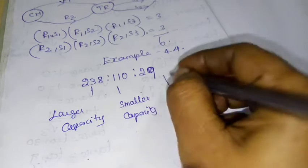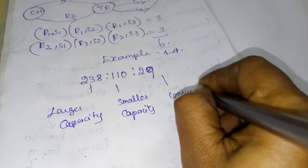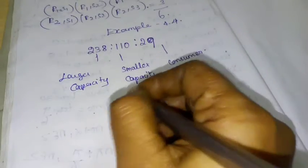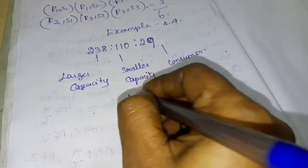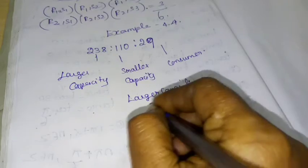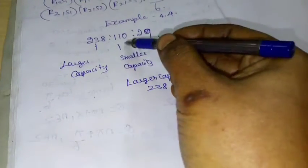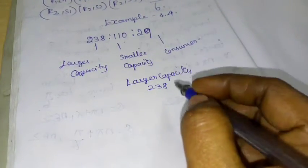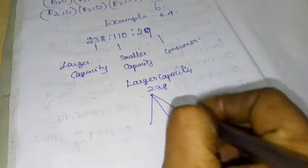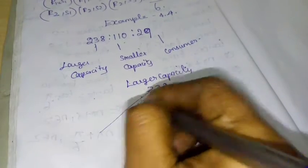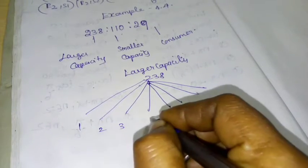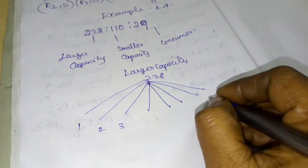This is the smaller capacity. So, 238 is the large capacity, and 110 is the smaller capacity. The connections are 100, with 1, 2, 3 — so 110 connections total.